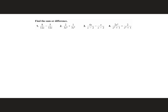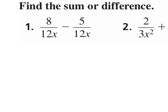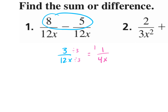Let's do a couple more — number 1. We subtract the numerators and get 3 over 12x. Can I simplify this? Yes — divide the top and the bottom by 3, so we get 1 over 4x.